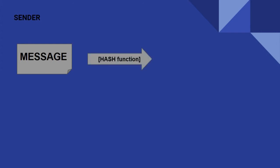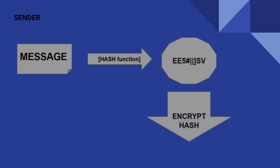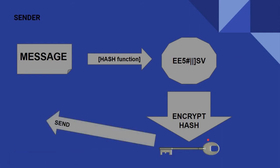Here is how a digital signature works. The sender creates a message — it can be an email, a document, or transmitted data, but we'll just call it a message for purposes of this video. The software performs a hashing function on the message to create a small digital representation called a digest. The software then encrypts the hash, or the digest, with the sender's private key, and then the message is sent on its way.